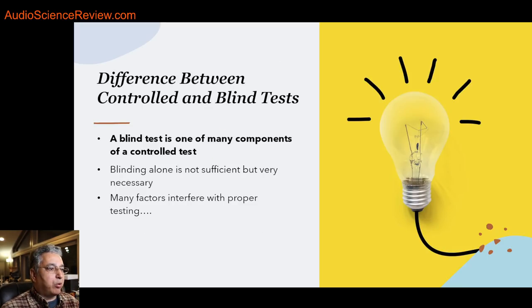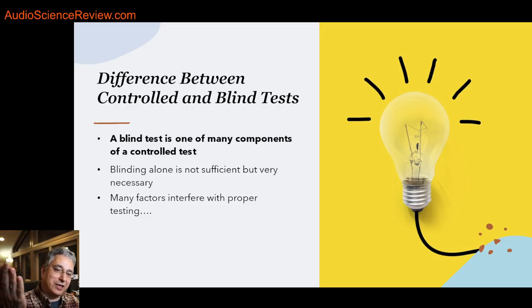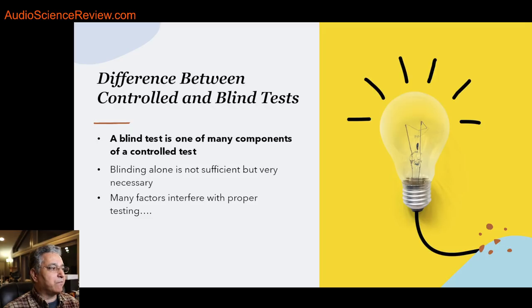Blindness is one aspect of developing a controlled test. By blinding, we take away the identity of what you're listening to. No matter who you are, you can be influenced by the shape, size, brand, or more importantly, you could literally cheat. If I tell you this is a $10,000 deck and this is a $20 deck, and you're inclined to say the $10,000 deck is better, if you know which is which, all bets are off. So we apply a blinding mechanism — this doesn't mean literally blindfold, although that can be useful too.